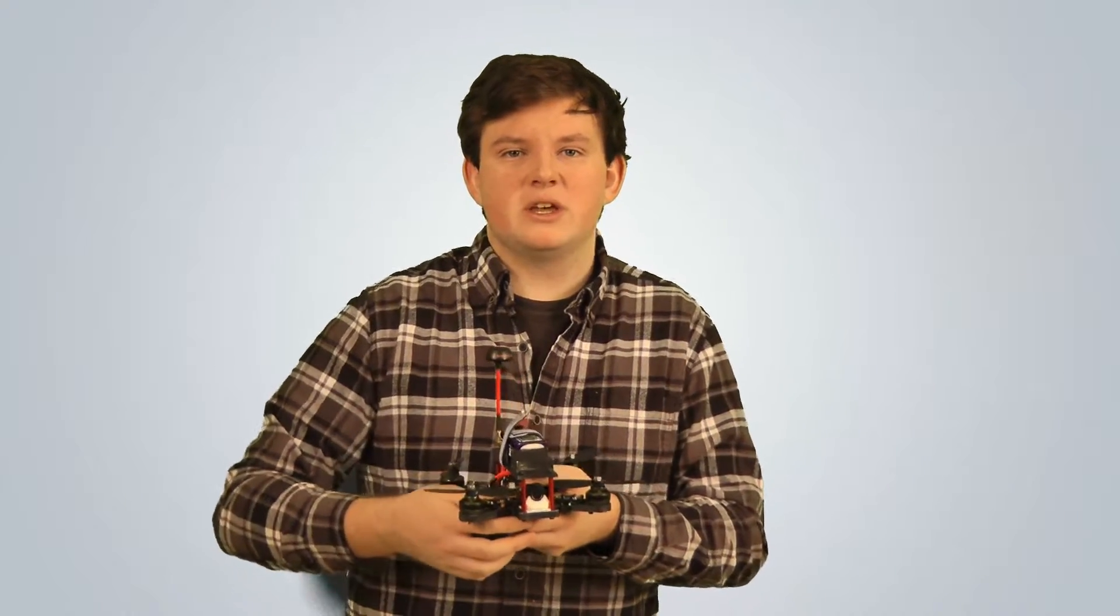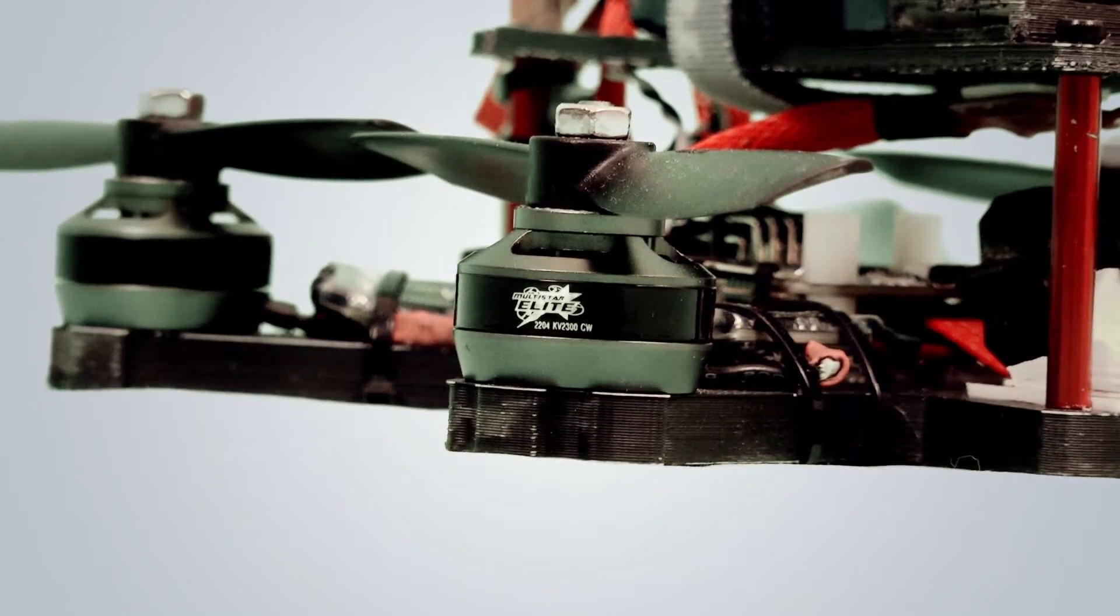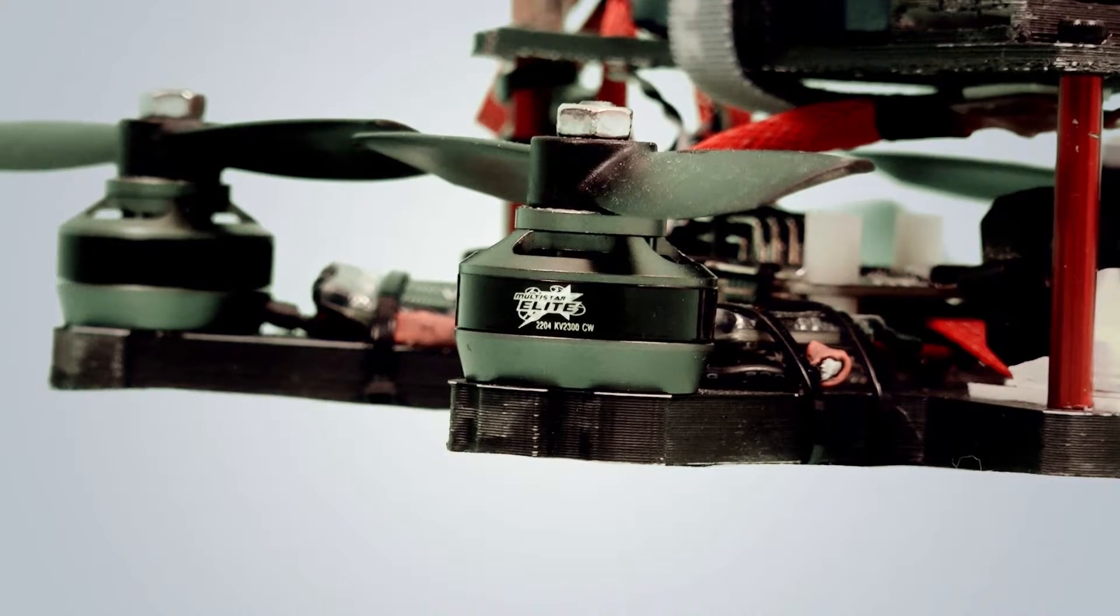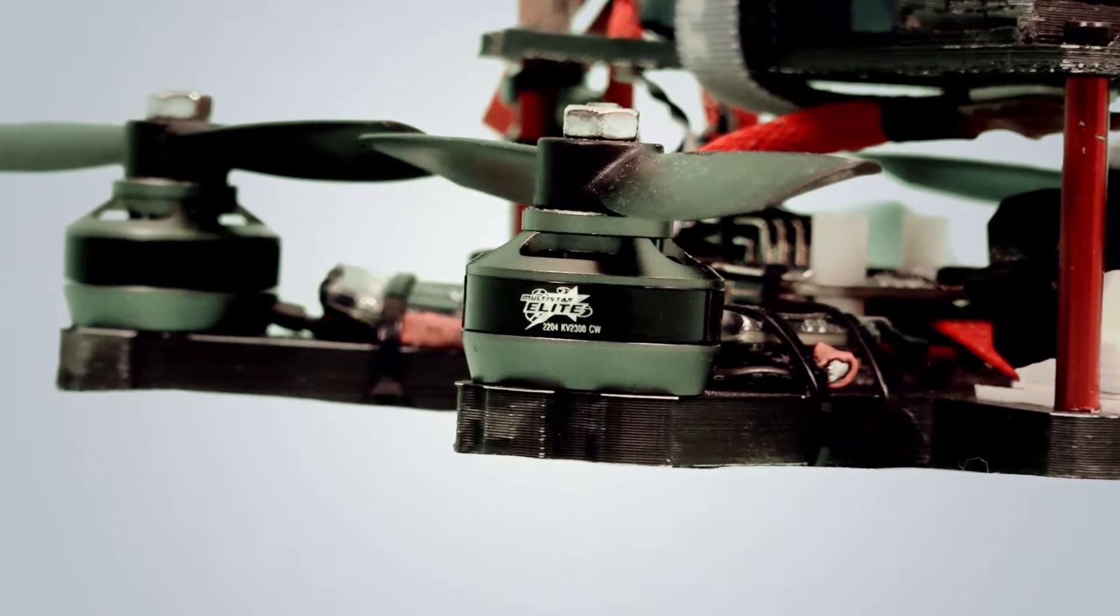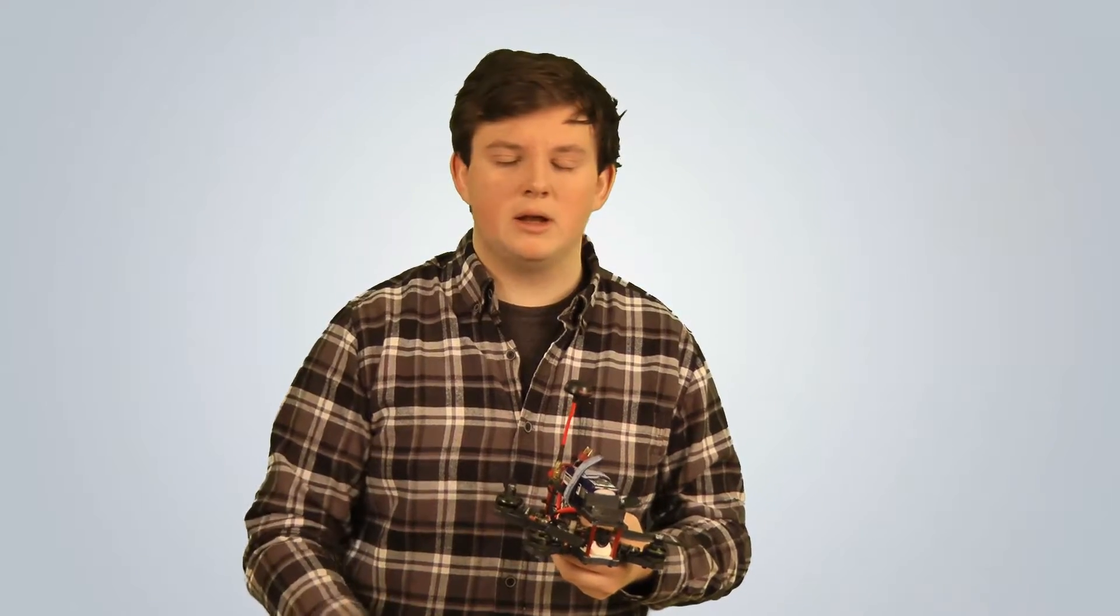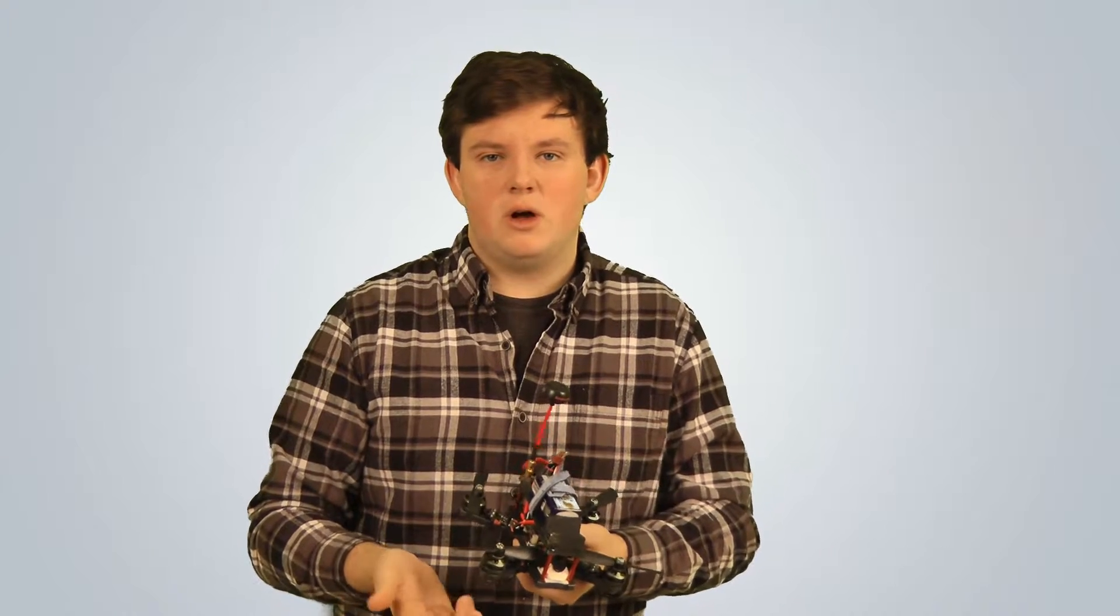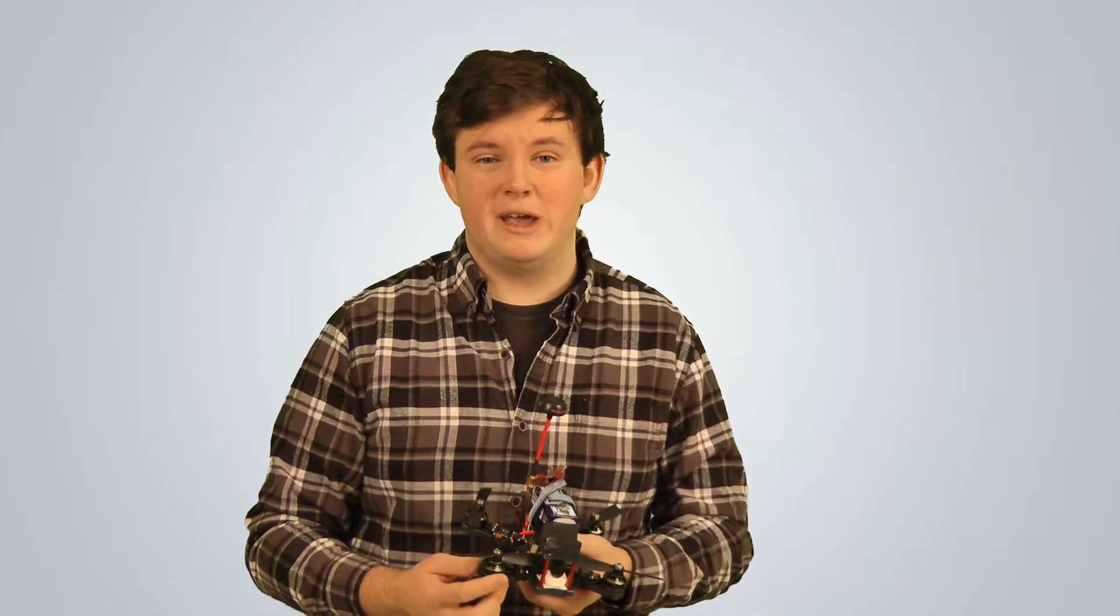Moving on to my parts selection for the build, I am running these Multistar 2204-2300KV motors. These are pretty much on every single one of my mini quad builds. I have them on my 250, I have them on my 180, I have them on my friend's 180s. These things are absolutely incredible. They don't run hot, they run fantastic, they have great spool up, great spool down, they look great. I love the green. I think it looks nice with these black props. I feel that they're $48 now. I felt that they were a great deal at $60, they're an even better deal at $48.